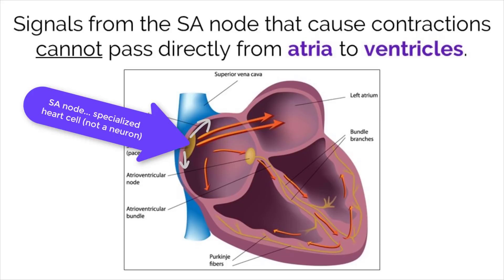When this occurs, ions diffuse across the gap junctions at the intercalated discs between the heart muscle cells, which causes the next cell to depolarize and contract. This chain reaction keeps moving, which causes the heart to beat.